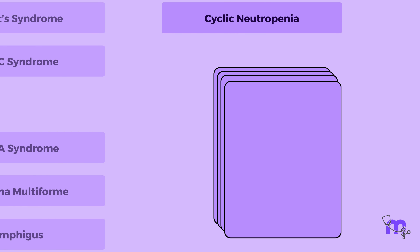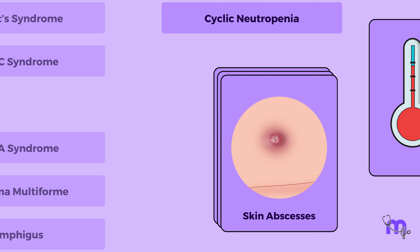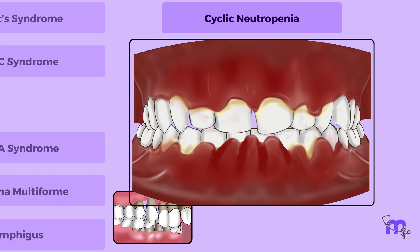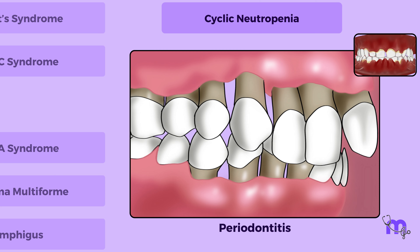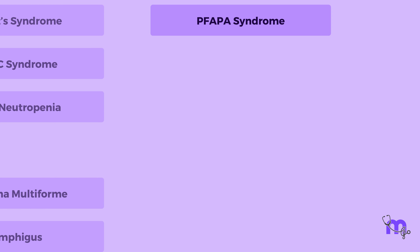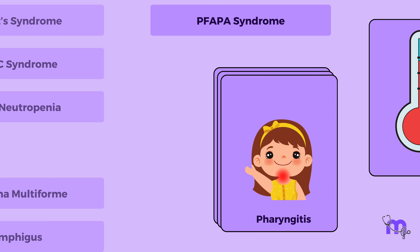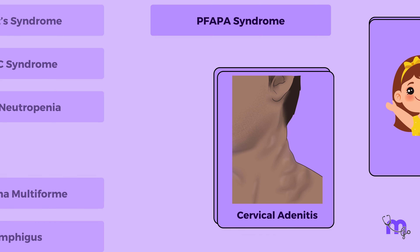Moving on to Cyclic neutropenia — this condition manifests with fever, skin abscesses, lymphadenopathy, and respiratory infections beyond mouth ulcers. Other oral complications like severe gingivitis and aggressive periodontitis might also be present. PFAPA syndrome was also ruled out; it primarily affects young children and involves recurring episodes of fever, pharyngitis, and cervical adenitis, along with recurring oral ulcers.